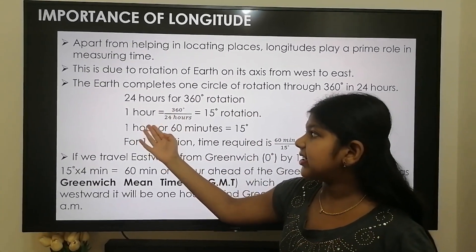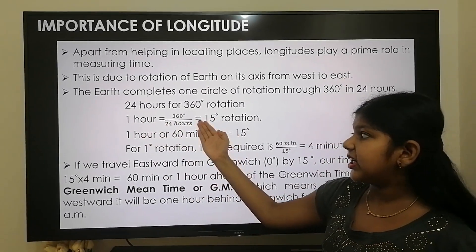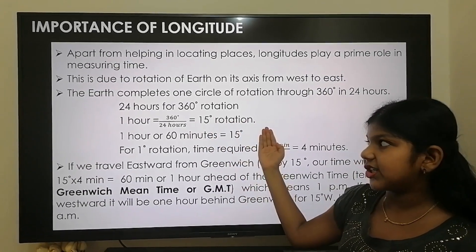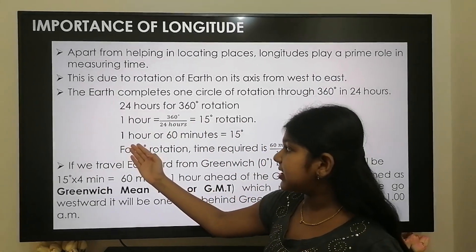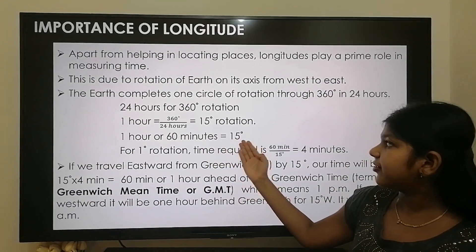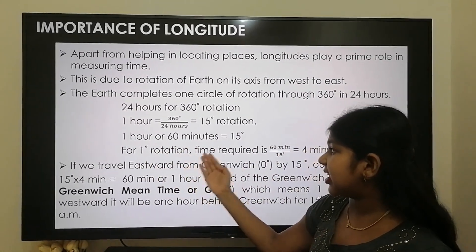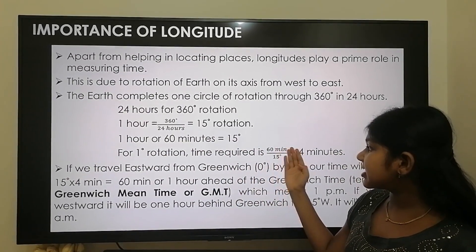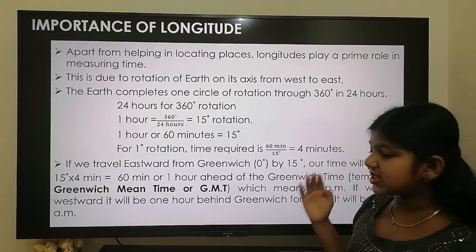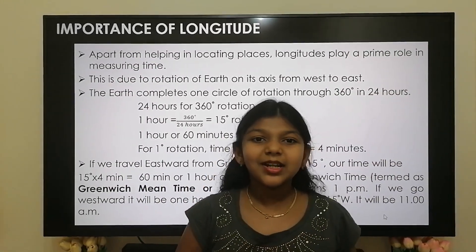Now we are going to calculate it for one hour. One hour is equal to 360 degrees divided by 24 hours, which is equal to 15 degrees rotation. It takes 60 minutes for 15 degree rotation. For one degree rotation, time required is 60 minutes divided by 15 degrees, which is equal to 4 minutes. So the earth takes 4 minutes to complete one degree rotation.